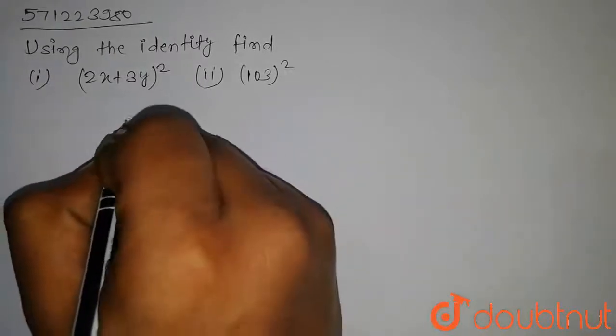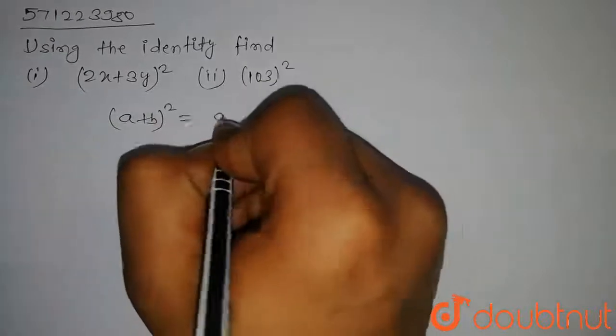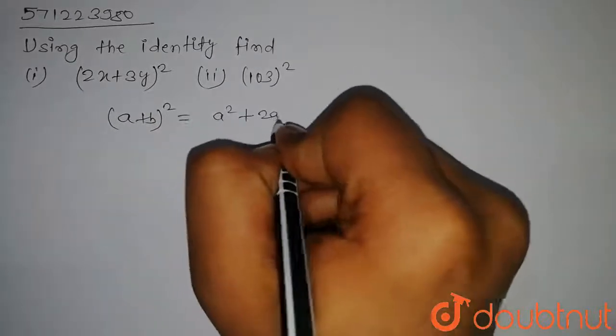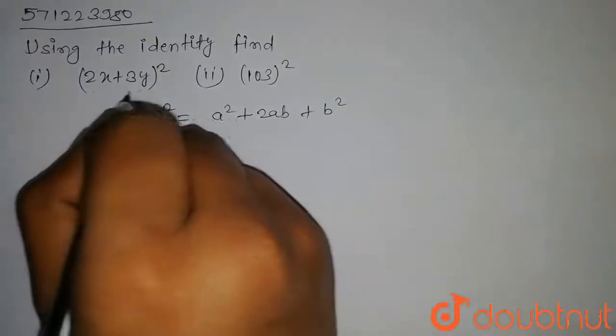We know that the formula of (a + b)² whole square is equal to a² plus 2ab plus b². By using this formula, we can find the value of this.